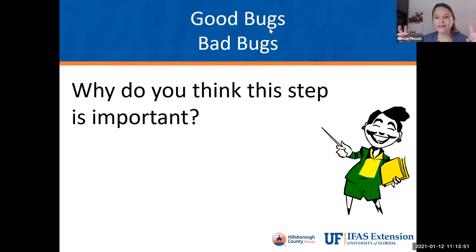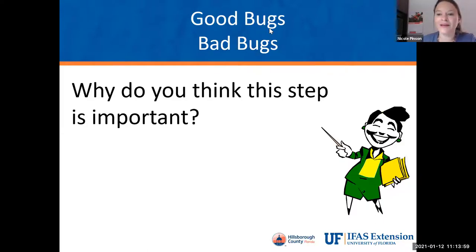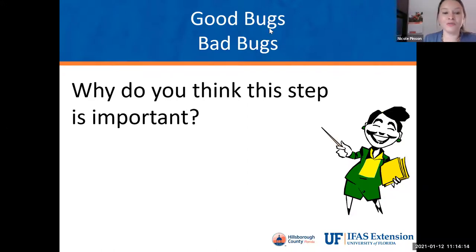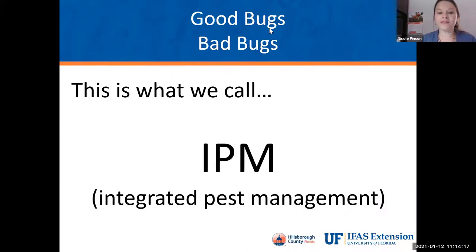I put 'pests' in quotes here because pests can refer to many different things — it could be an insect, a weed, a disease problem, or a fungus. If we're not properly identifying that pest, we could be using resources or putting chemicals down that aren't matched to what we're trying to control. This is part of a process called integrated pest management, or IPM for short.